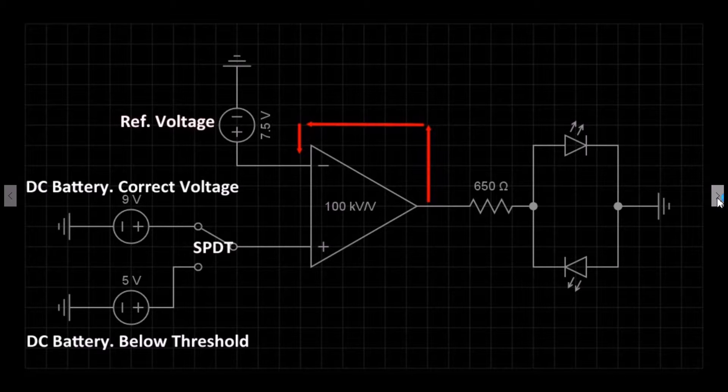The 9 volt and 5 volt power supply connect to the inverting input of the op-amp.